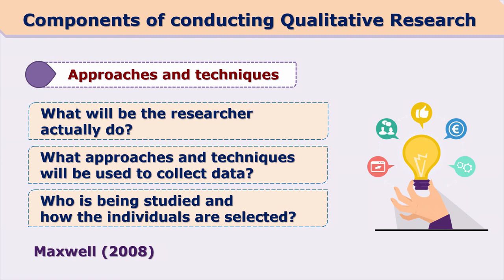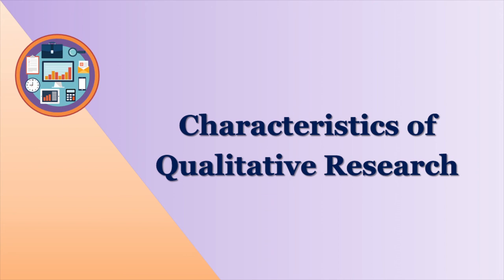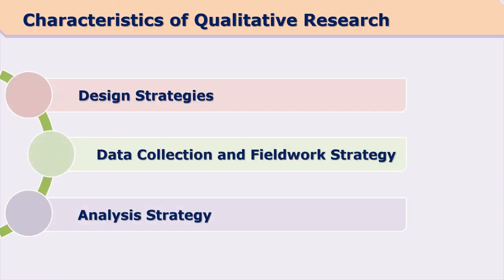Who is being studied and how are these individuals selected? That is also an important factor in qualitative research. Any research has three parts: design of the research, data collection, and analysis. When we discuss characteristics of qualitative research, we need to discuss it in terms of design strategies, data collection — including fieldwork — and analysis strategies.